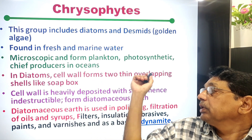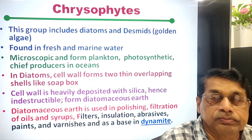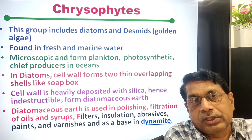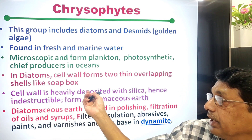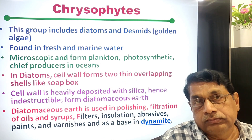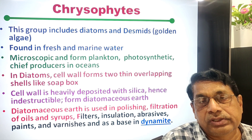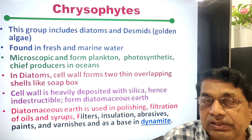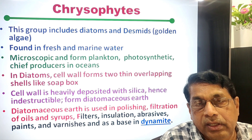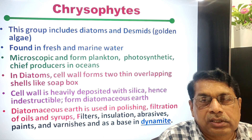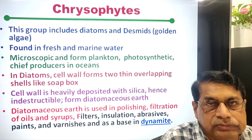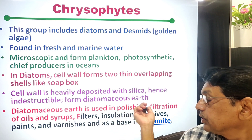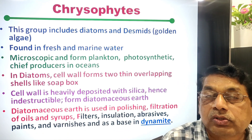Diatom cell walls form two thin overlapping shells like a soapbox — an upper part (epitheca) overlapping the lower part (hypotheca). The cell wall is heavily deposited with silica, making it hard and indestructible. They form diatomaceous earth when they die in large masses inside the sea. Diatomaceous earth is useful for polishing, filtration of oils and syrups, insulation, abrasive paints, varnishes, and is also used in dynamites.